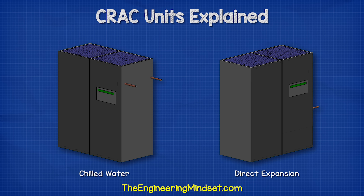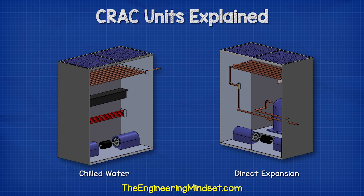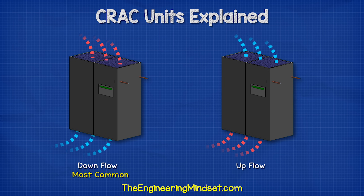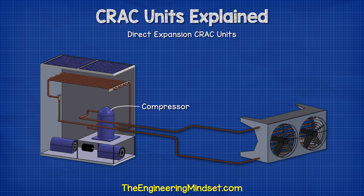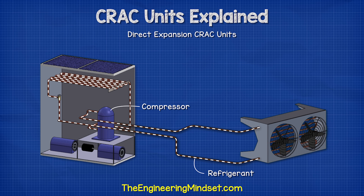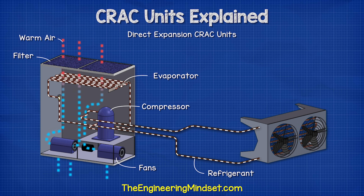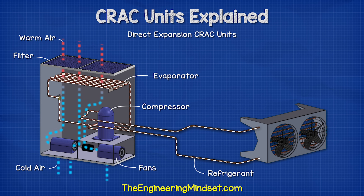When it comes to CRAC units, we have two main types: chilled water and direct expansion. We also have upflow and downflow, which indicates the direction the cooled air flows — downflow being the most common. Smaller data centers will often use direct expansion units where an internal compressor pushes refrigerant around the system. A fan moves the hot air over a heat exchanger known as the evaporator, and the refrigerant flowing inside absorbs this heat, so the air leaves cooler and is pushed into the void under the floor.